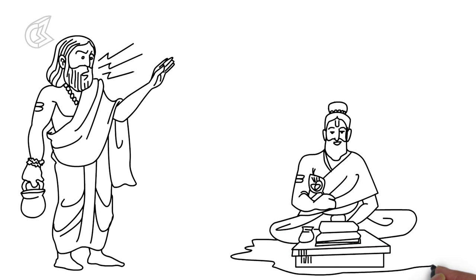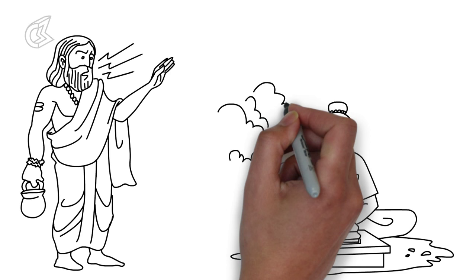After this, Valmiki wrote the Ramayana in shlokas under the guidance of Brahma. It was he who gave shelter to the banished Sita in his hermitage.